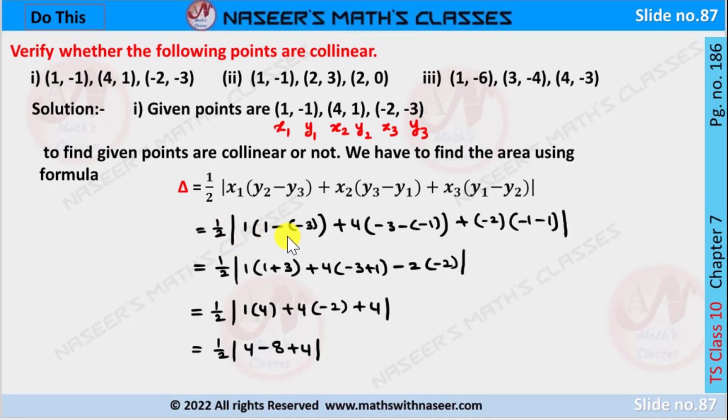After substituting: ½|1(1 - (-3)) + 4(-3 - (-1)) + (-2)(-1 - 1)|. After simplifying, we write it as: when minus times minus becomes plus, we can write it as 1 + 3.